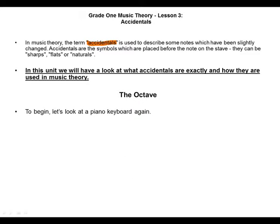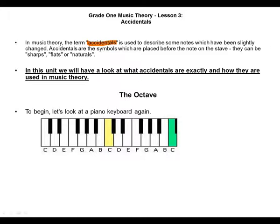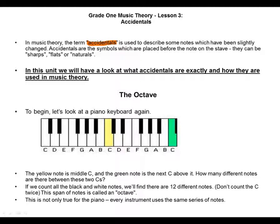To begin, let's look at the piano keyboard. This is our keyboard. We have white notes and black notes. The yellow note is middle C, and the green note is the next C above it.